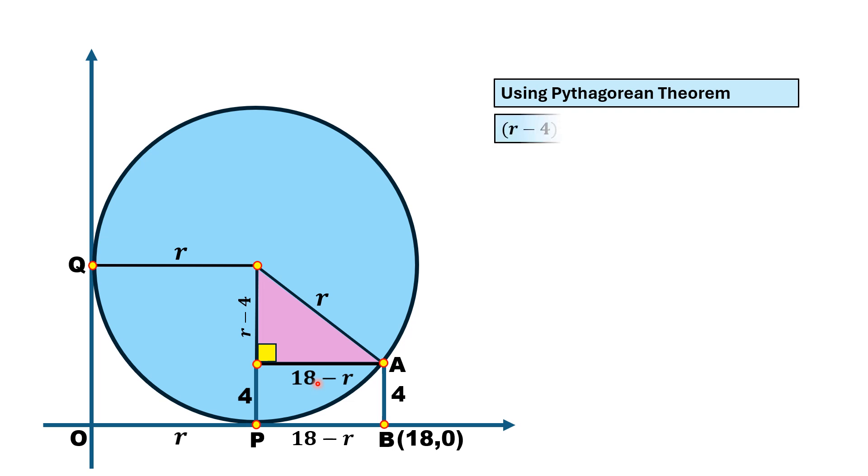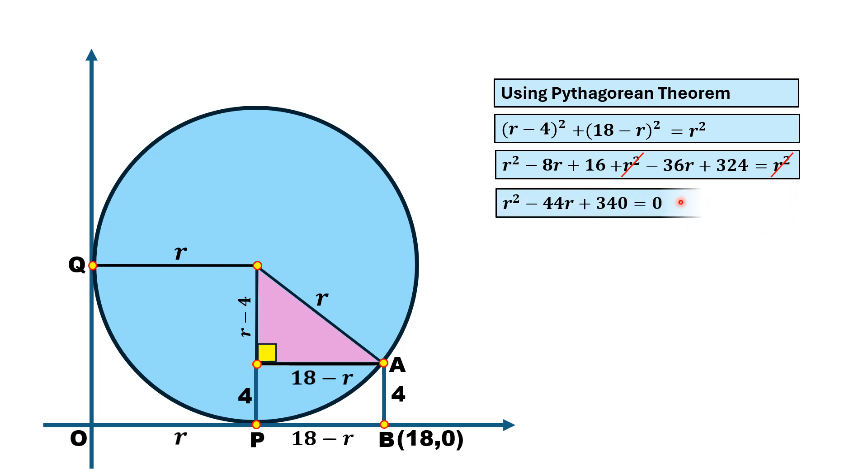We have (r - 4)² + (18 - r)² = r². Expanding the binomials: (r - 4)² = r² - 8r + 16, and (18 - r)² = r² - 36r + 324. So r² - 8r + 16 + r² - 36r + 324 = r². One r² from the left cancels with r² on the right. After simplification, we have r² - 44r + 340 = 0.